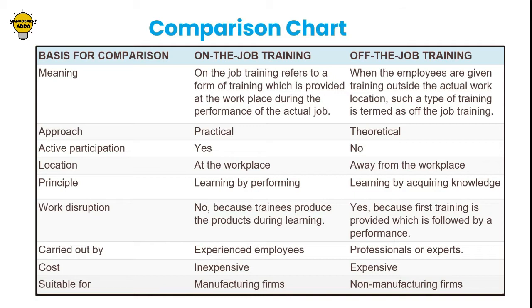The main aim of on-the-job training is to make the employees familiar with the normal working situation. During the training period, the employees get first-hand experience of using machinery, equipment, tools, materials, etc. It also helps employees to learn how to face the challenges that occur during performance of the actual work. In this training method, trainees learn by doing the actual work.